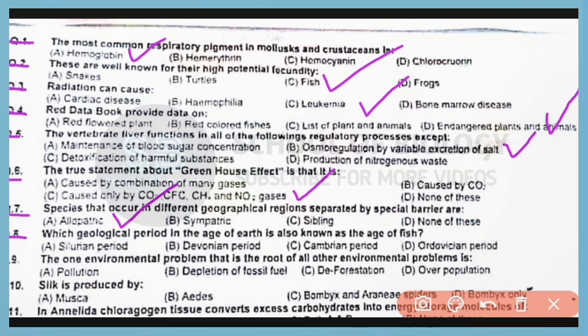Question number 8. Which geographical period or age of Earth is also known as age of fishes? Correct answer is option B. Devonian period is the age of fishes.